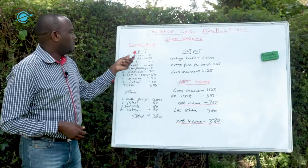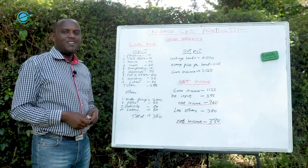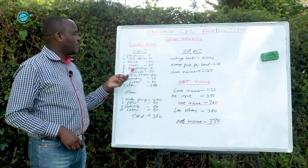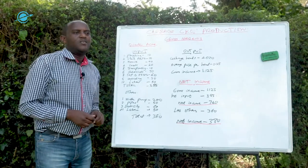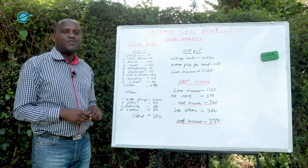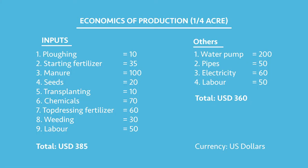First of all, we're going to start with the inputs. We have the plowing input at $10. The starting fertilizer — that is phosphatic, rich in phosphorus — at $35. The manure, very well decomposed manure, would be $100. The seeds sufficient for a quarter of an acre are $20. Transplanting is $10. Chemicals would be $70. Top dressing fertilizer is $60.